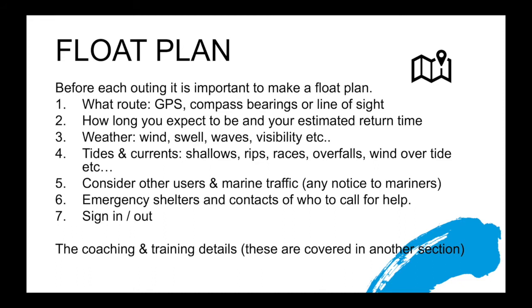Let's look more deeply at what's in a float plan. The key element is what route you're taking — this may take the form of GPS coordinates, compass bearings, or line of sight. For example, line of sight might mean going off round to a certain buoy off a headland and returning back into an estuary. How long you expect to be away is really important, and your estimated time of return is probably the single most critical bit — because unless you've actually physically planned the route, it's very difficult to estimate your return time. The next element is assessing weather information.